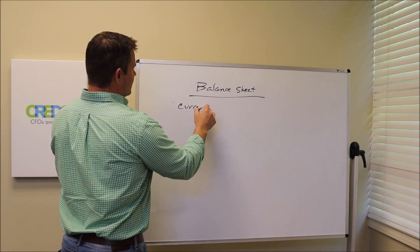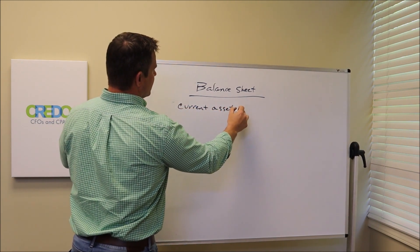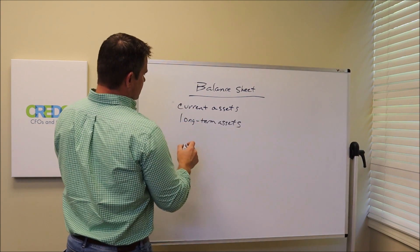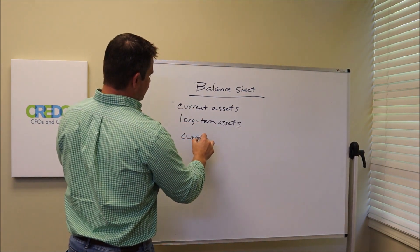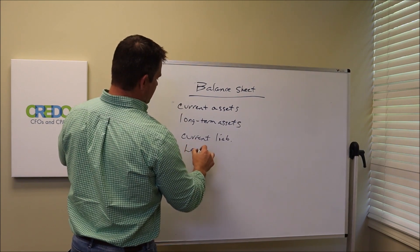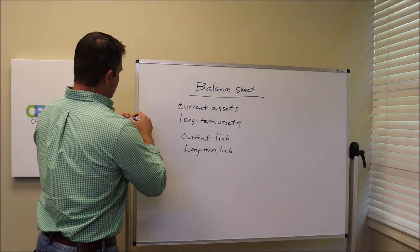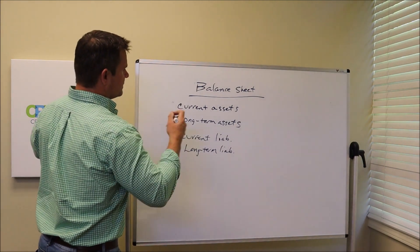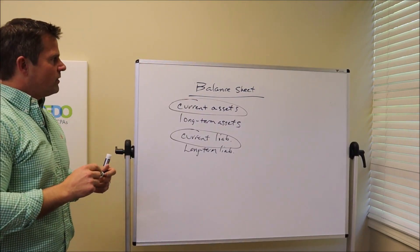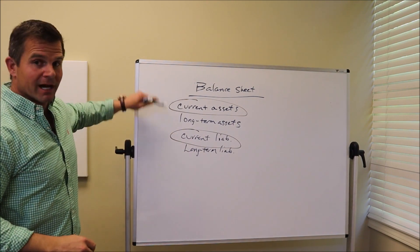Let's just look at a part of the balance sheet. We have current assets, we have long-term assets, we have current liabilities, and we have long-term liabilities. I want to focus on the current assets and the current liabilities for a second. Now we know that the balance sheet goes top to bottom.